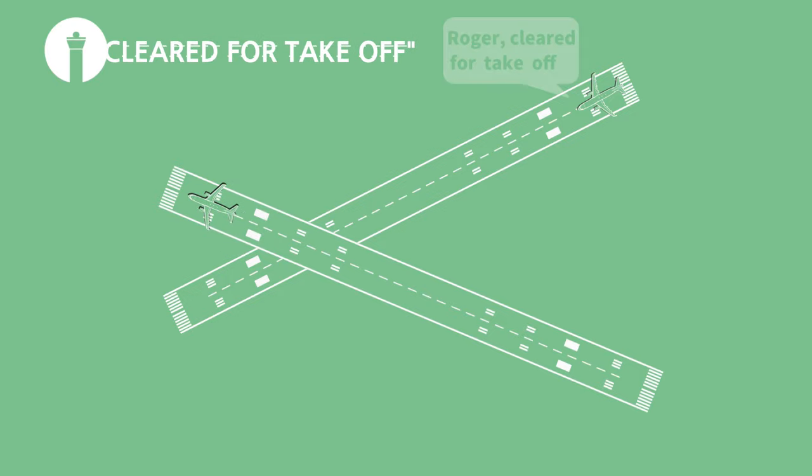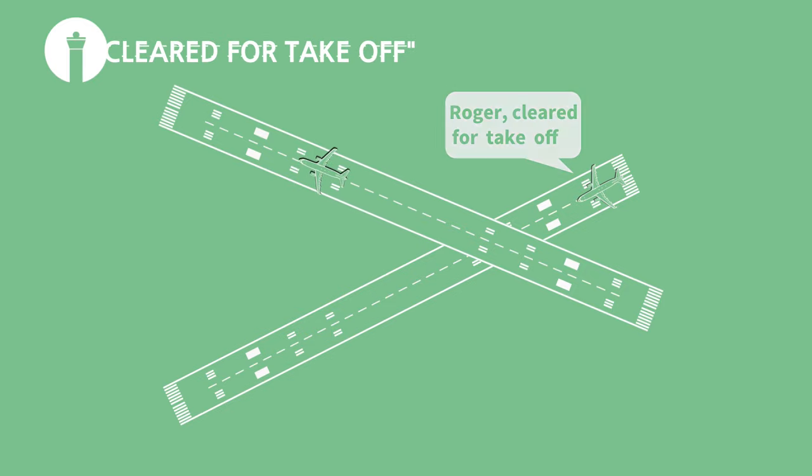For example, if a runway is used for takeoff and landing respectively, the takeoff aircraft must hold until the landing aircraft has passed the intersection area. Therefore, the closer the intersection is to the touchdown area for landing, the shorter the takeoff waiting time and the higher the capacity.